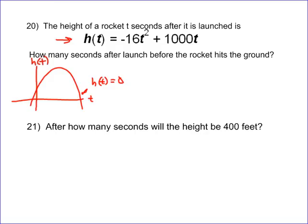So what we want to find out is when on this graph do we get zero. It's going to be negative 16t squared plus 1,000t, and I want to know when is this equal to zero. Whenever both of your terms have variables in them, the best way to do it is to factor. So I need to pull a t out of both of those, giving t times negative 16t plus 1,000 equals zero.